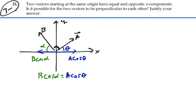So it's definitely possible for the two vectors to be perpendicular to one another. Here we go.